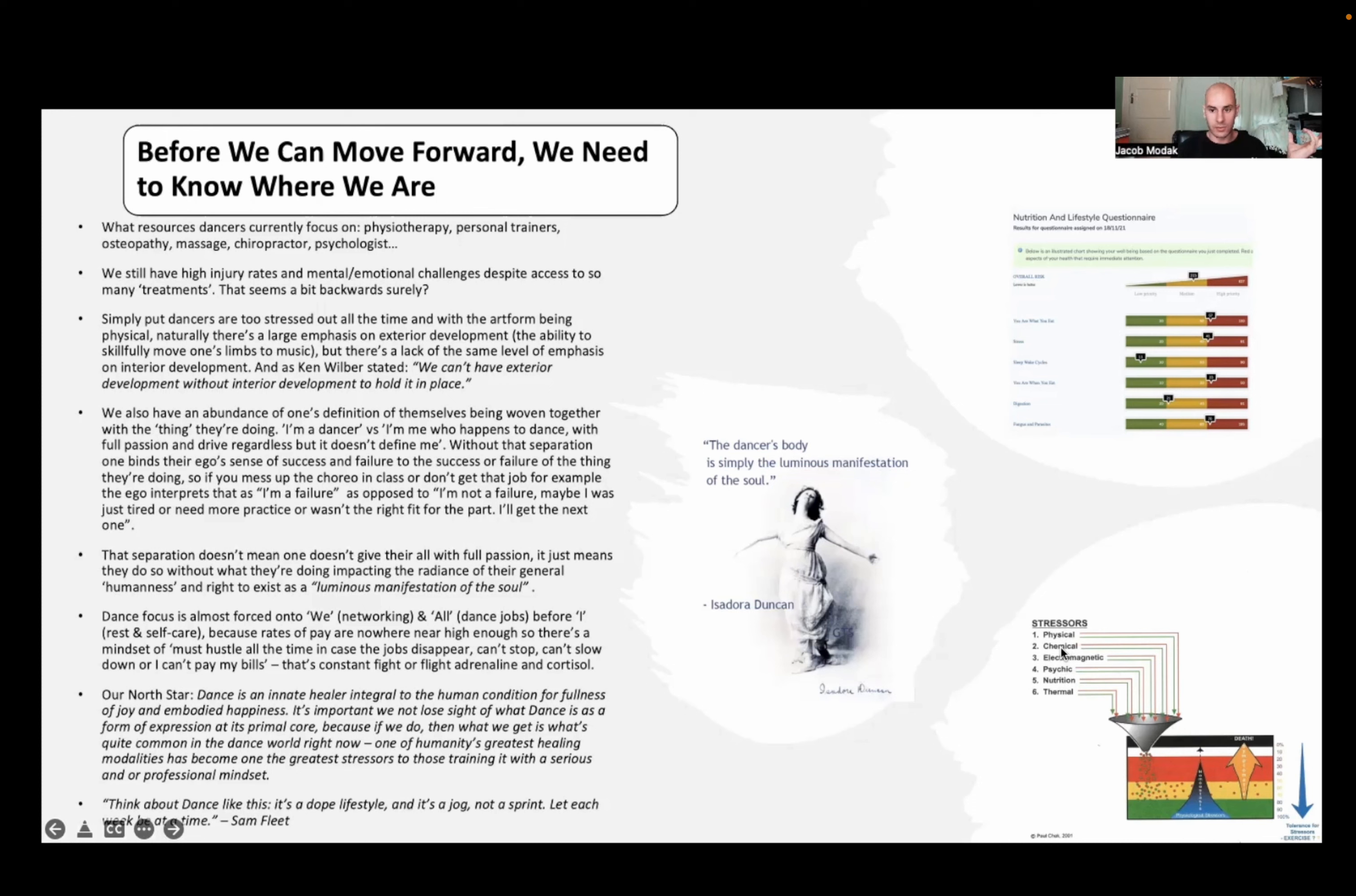So chemical toxins in the water, physical too much movement or too little movement, electromagnetic UV from the sun for example, psychic thinking - is your thinking good or is it bad, is it helpful to you or is it causing you stress, nutritional organic food, non-organic food, too many toxins, thermal too hot too cold.